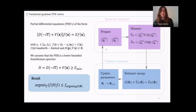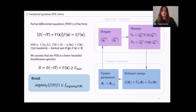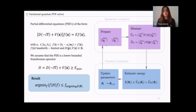The first ingredient is state preparation. The solution will be encoded as a quantum circuit, but since the solution is a continuous function and the quantum circuit is discretized, we need to map the continuous function to an n-qubit quantum register. We will work in both momentum and position space using the quantum Fourier transform, and also use Fourier interpolation to reproduce the continuous function from the discretized register.